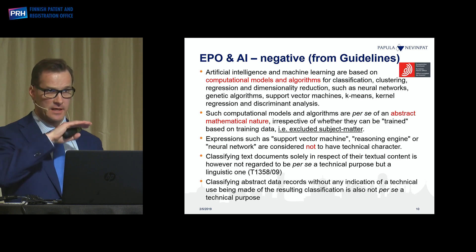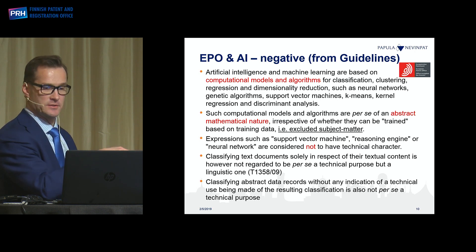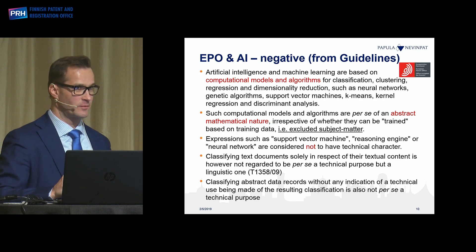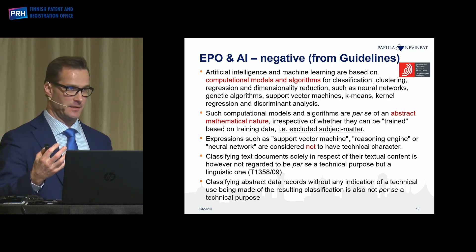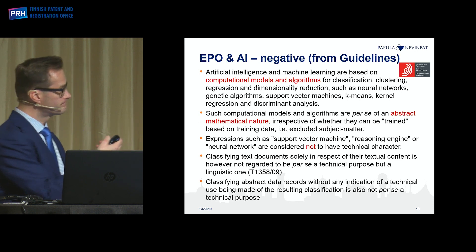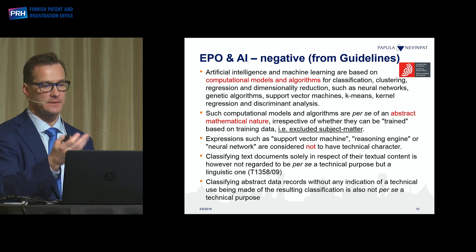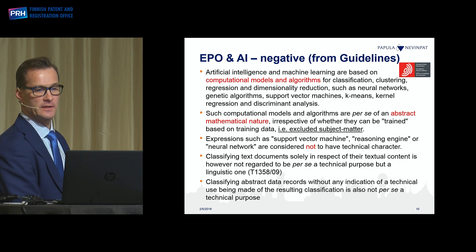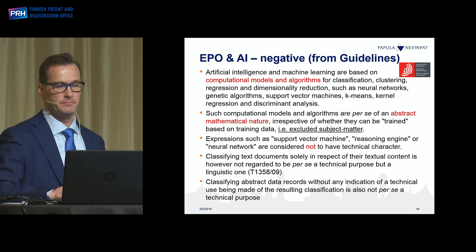In view of the overstrike example I showed, the following is very relevant. They said that expressions such as support vector machine, reasoning engine, or neural network are considered to not have technical character. For me as a practitioner, this is a problem, because I would hope the neural network would be regarded as a technical element, since a lot of AI-related problems will somehow involve a neural network. They also gave examples: classifying documents solely in respect of their textual content is not technical and excluded. Classifying abstract data records is also considered per se not technical and excluded.